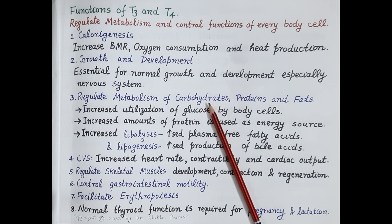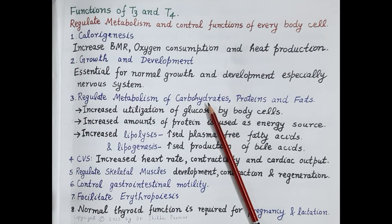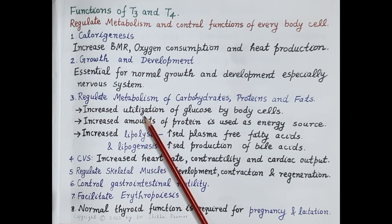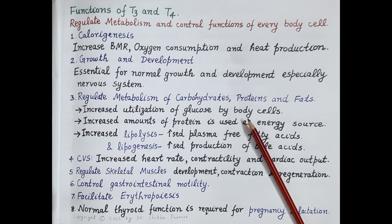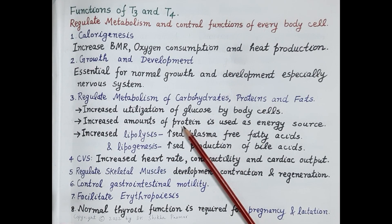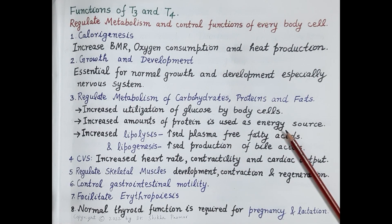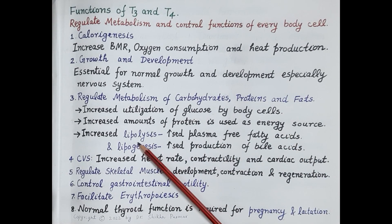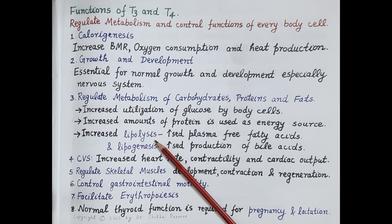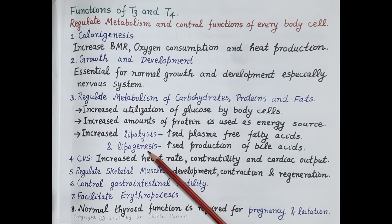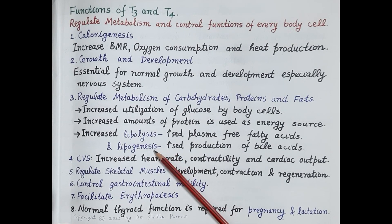T3 and T4 stimulate carbohydrate metabolism — they stimulate breakdown of glycogen and proteins to produce glucose, and increase utilization of glucose by body cells. Regarding protein metabolism, certain proteins are synthesized but a majority are broken down to amino acids, which are used to synthesize glucose as an energy source. T3 and T4 also increase lipolysis as well as lipogenesis, so lipids are both broken down and synthesized.